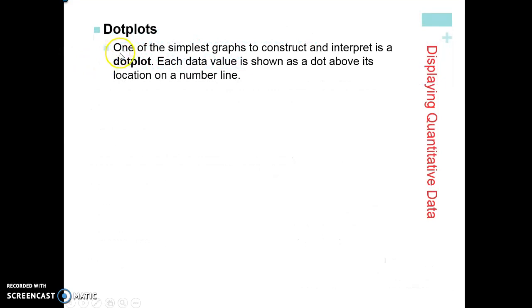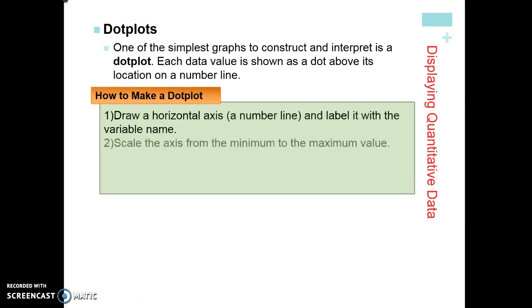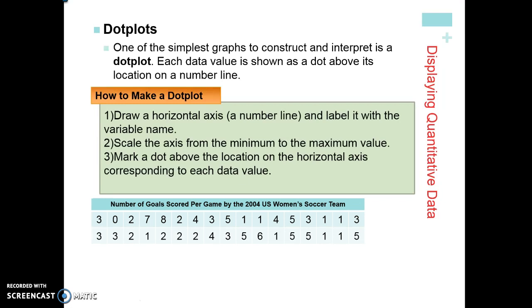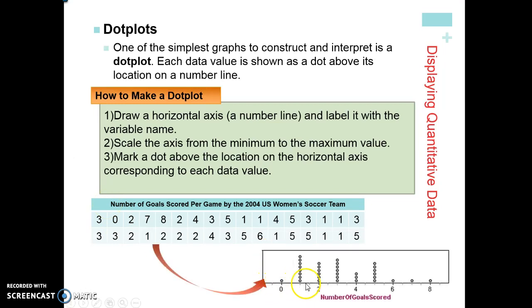One of the simplest types of graphs to construct and interpret is a dot plot. The reason that a dot plot is so nice is that it actually displays all of the data. If we were taking a look at the number of goals scored per game by the 2004 US women's soccer team, notice we have a horizontal axis. We label it with the variable name, number of goals scored, and we scale the axis. We also have a numerical label and we put a dot above each location on the horizontal axis that corresponds to the data value.